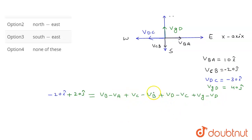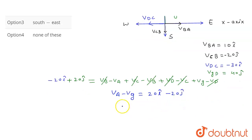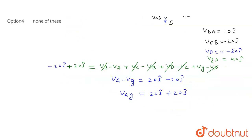After cancellation, V_B, V_C, and V_D all cancel out, leaving V_A − V_G. So V_A − V_G equals −20î + 20ĵ, which means the velocity of A with respect to the ground is 20î + 20ĵ.